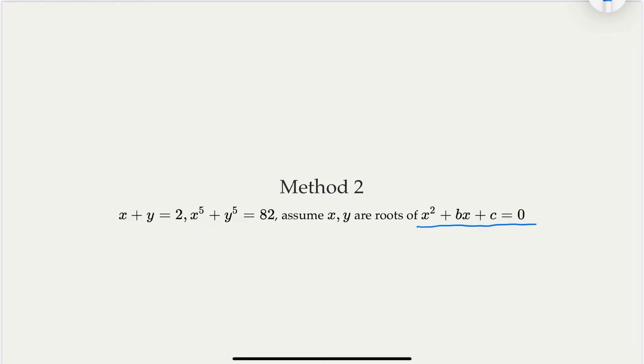So if x and y are a quadratic equation like that, we know that x plus y would equal negative b, x times y would equal to c. In this case, we're given x plus y equal to 2. So this is equal to 2. So what we get is b must be negative 2.